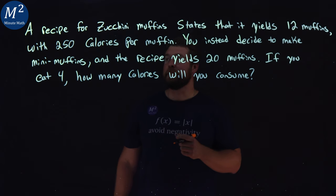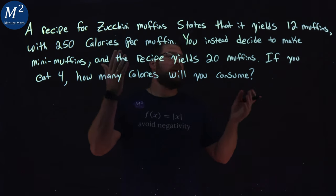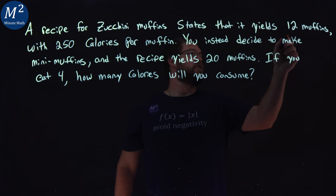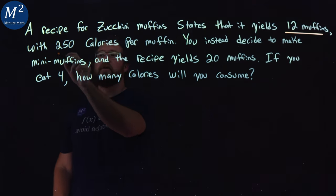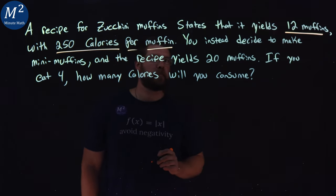Let's learn. Zucchini muffins — we're making here. We get 12 muffins and it's 250 calories per muffin.